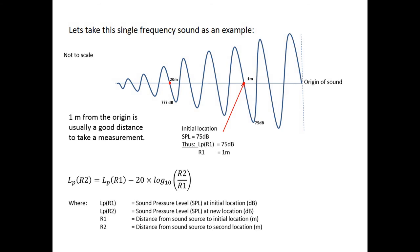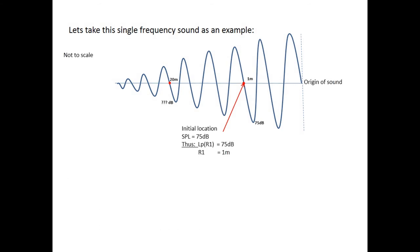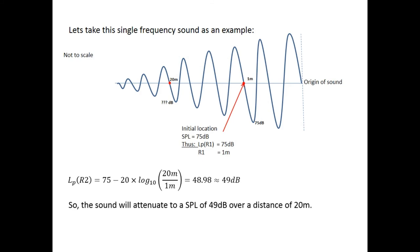How much did the sound actually decay? So we can see from the waveform that it did decay. But how much did it decay? So we have our formula there, and we can now just enter all of the information. The first thing that we will do is put in our 1 meter and our 20 meters in the R1 and R2 positions. And then, of course, the 75 decibels as our sound pressure level 1. Just calculate it out using your scientific calculator, and we will get a value of roughly about 49 decibels. Now, that is quite a significant drop from 75 decibels.